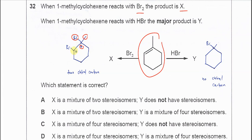This second carbon is also a chiral carbon — it has one hydrogen, one bromine, and two other different groups. So it has a chiral carbon. When there are two chiral carbons, the compound will form four optical isomers or stereoisomers. So the answer can only be C or D.